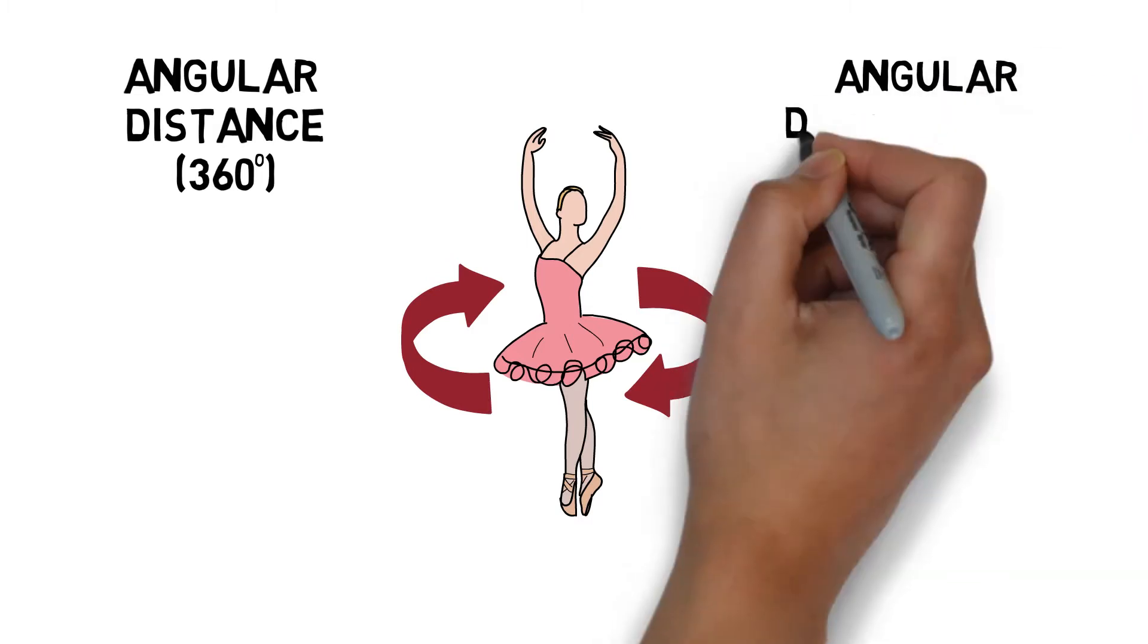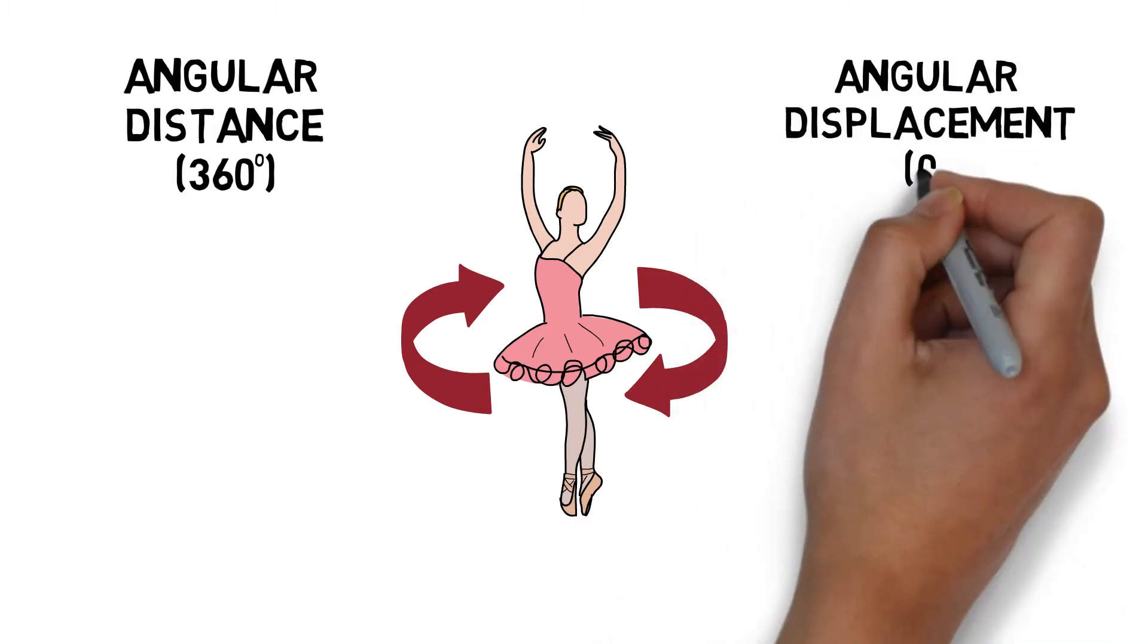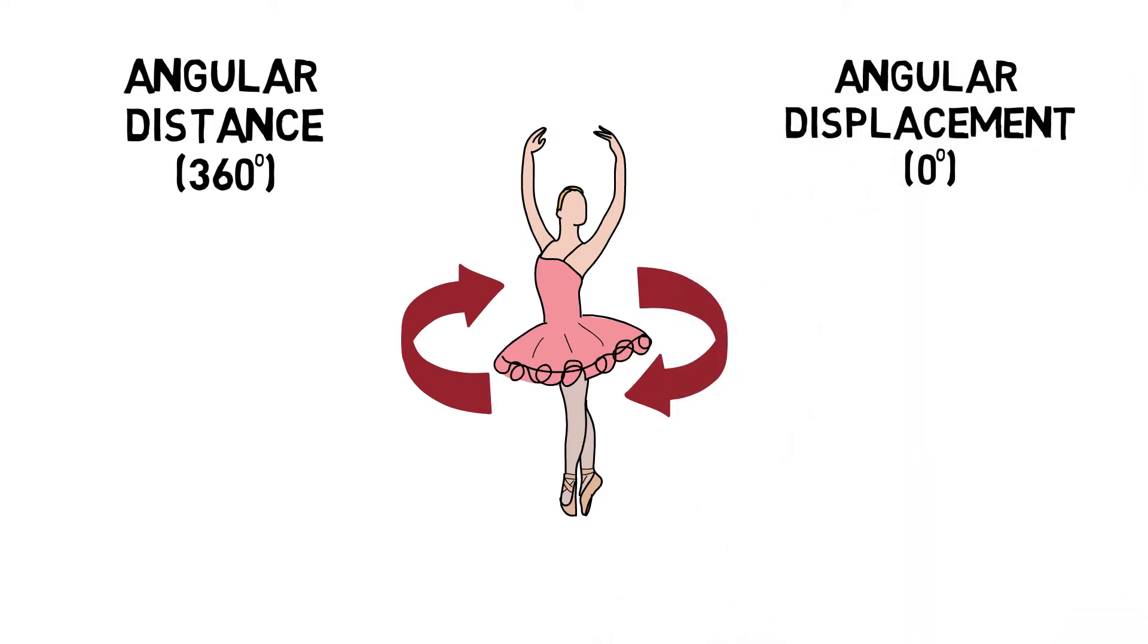Angular displacement is the smallest change in angle between the starting and finishing point and is also measured in degrees or radians. If we use the same pirouette example, the athlete moves an angular displacement of zero degrees.